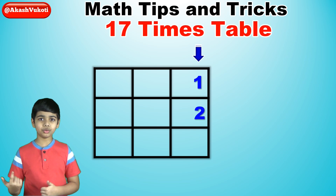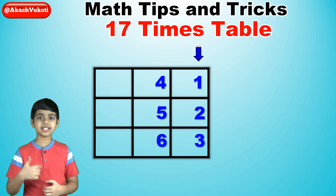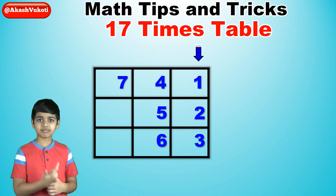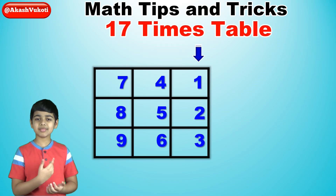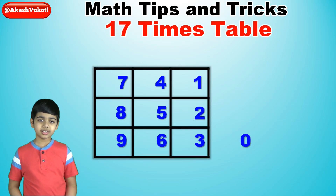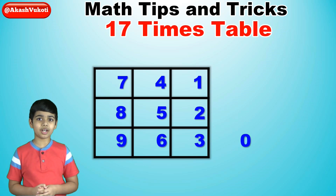So, 1, 2, 3, 4, 5, 6, 7, 8, 9. And then we write a 0 outside of the box.